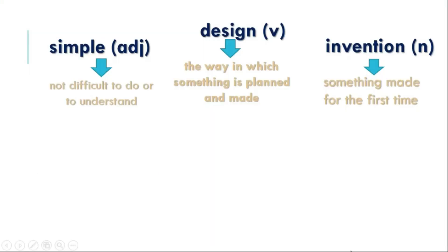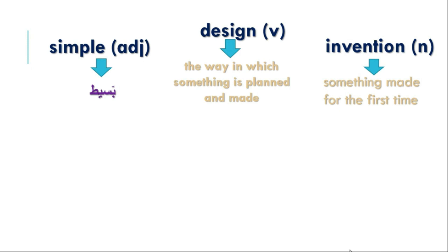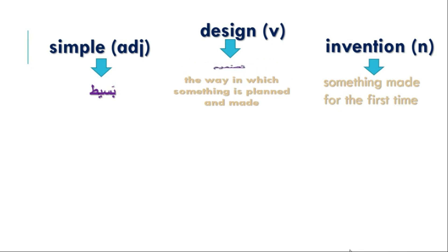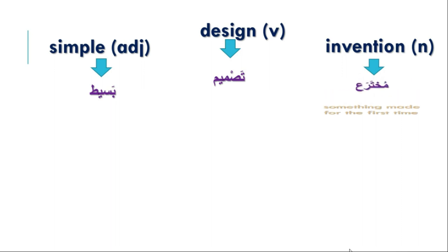Let's look at these three words. We have simple — this is an adjective meaning not difficult to do or to understand. And we have design — this is the way in which something is planned and made. And then we have invention, which is a noun, and that is something made for the first time.